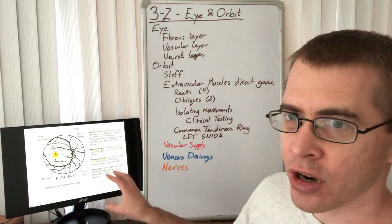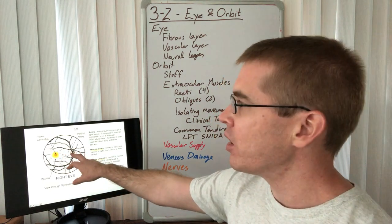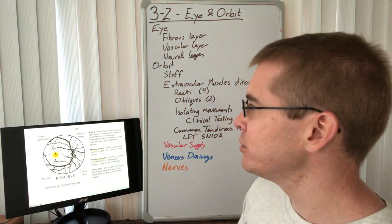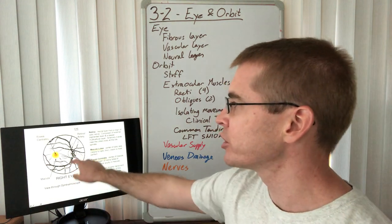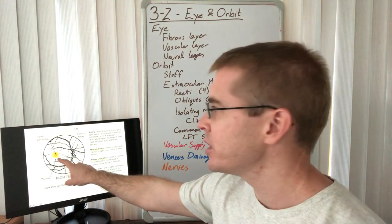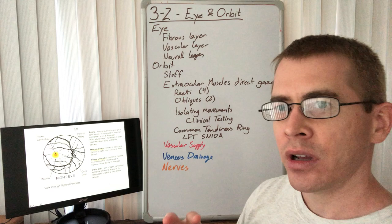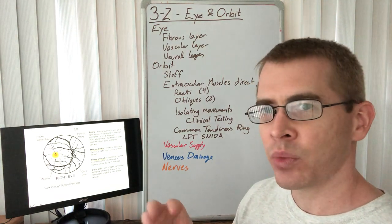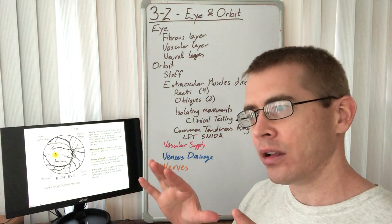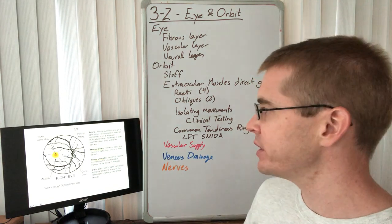Looking through an ophthalmoscope, we can see the back of the eye including the central retinal artery as it travels through the optic disc in the posterior portion. The area of clearest vision is called the fovea centralis within the macula lutea, where the arteries are not obstructing and the rods and cones are most clearly impacted by incoming photons.